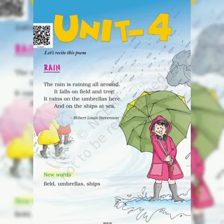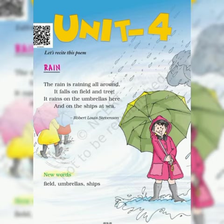Rain. The rain is raining all around. It falls on field and tree. It rains on the umbrellas here and on the ships at sea. Let us now understand the summary of the poem.